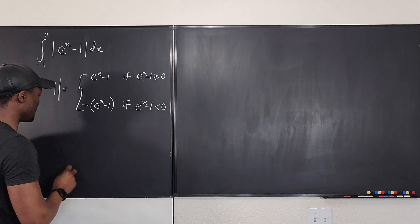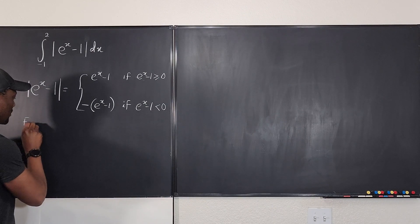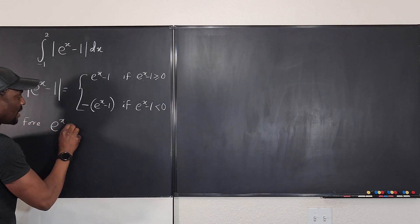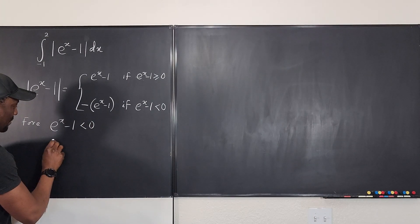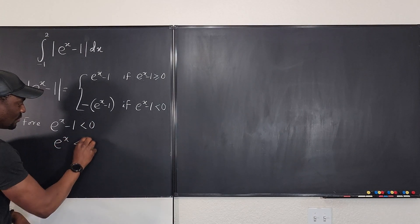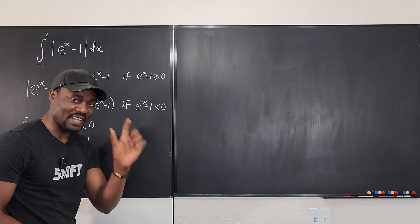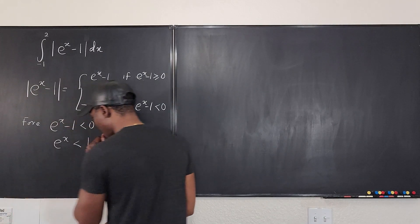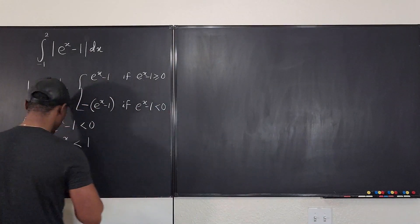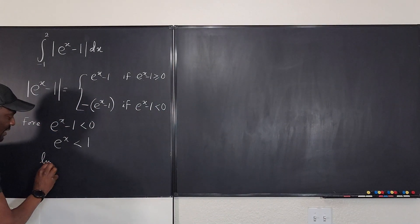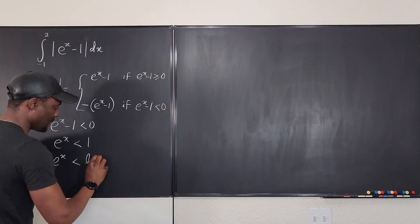So here, let's focus on e to the x minus one less than zero. We have e to the x is less than one. When is e to the x less than one? You just want to find the values of x that are relevant. So you're going to take the natural log of both sides. If I take the natural log of both sides, ln of e to the x is less than natural log of one.